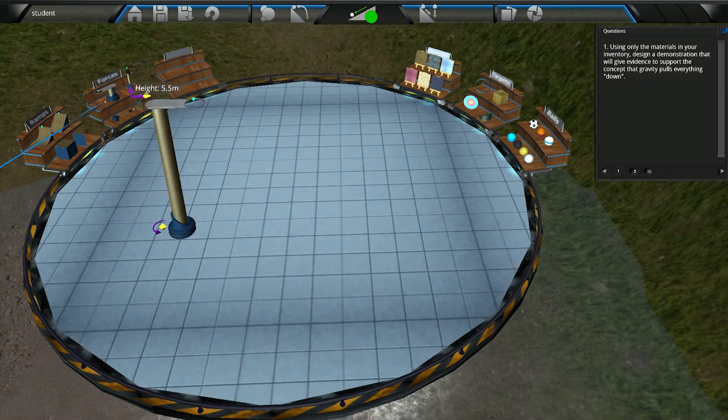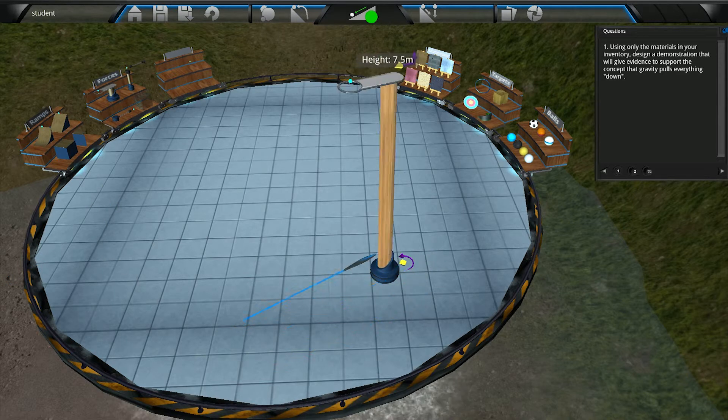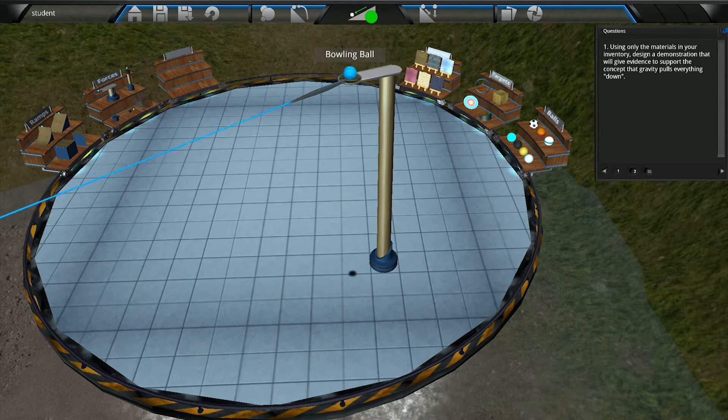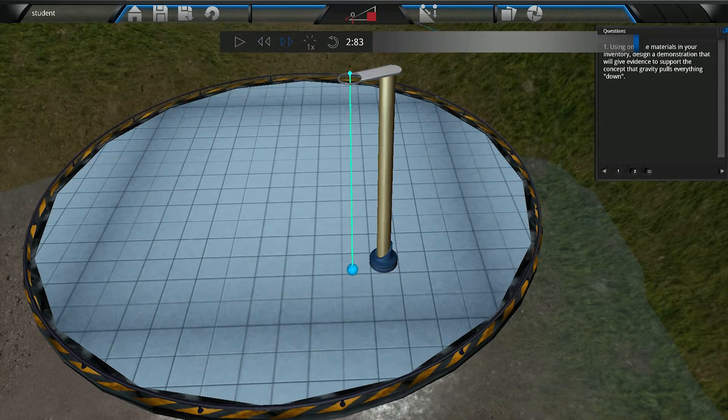In the Gravitational Force Evidence Activity, students will design and build a structure to give evidence of the concept that gravity pulls objects down. They will test and redesign their structures as needed.